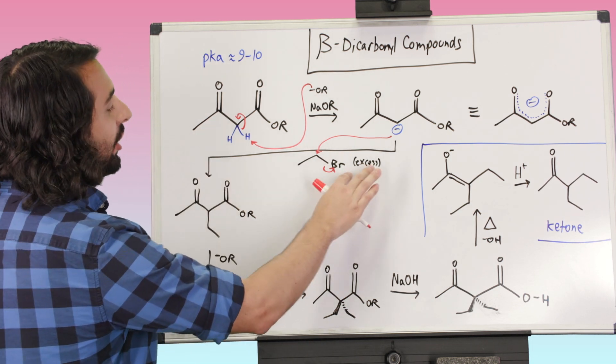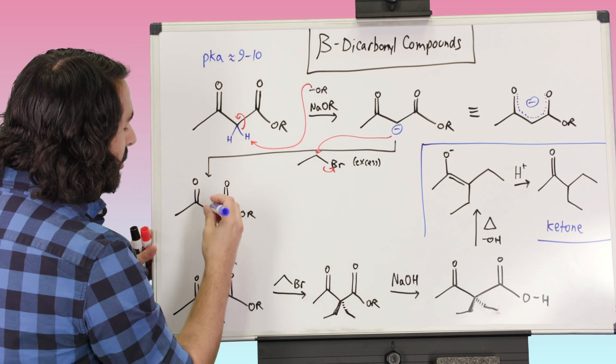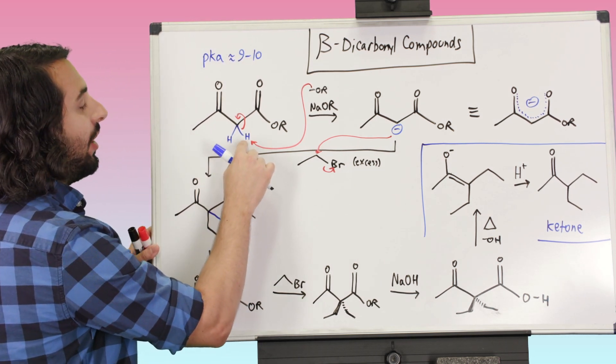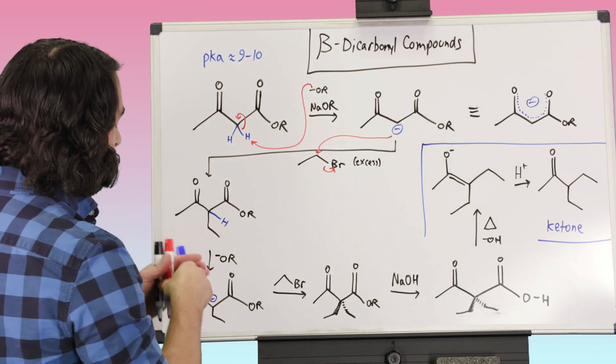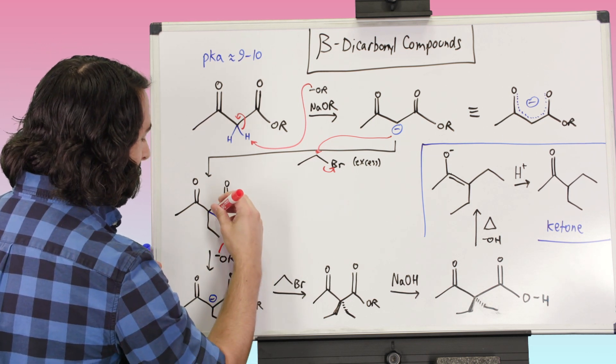And so, but the thing is, we are going to use excess, there is a lot more base in solution. And there is no reason that this, there were two acidic protons to begin with. And we got one of them to produce the anion to do one SN2. But there is more there, there is another proton and there is more base in solution. So why don't we do it again?